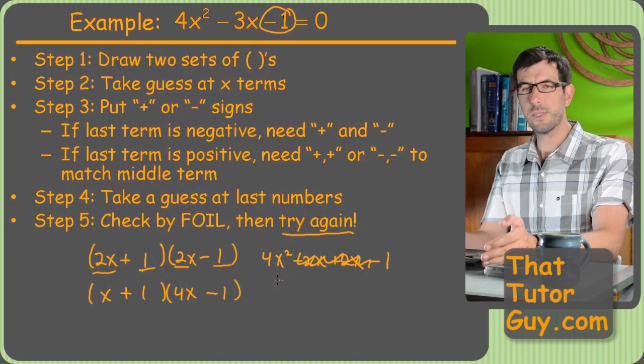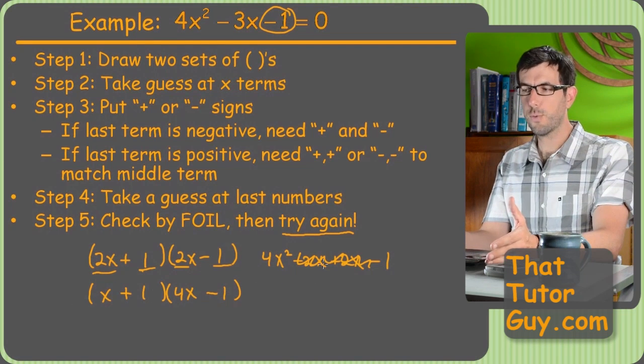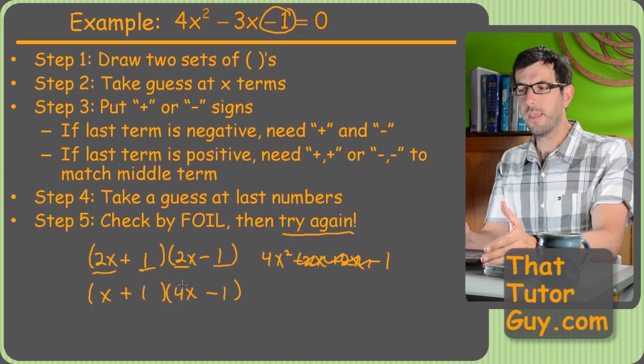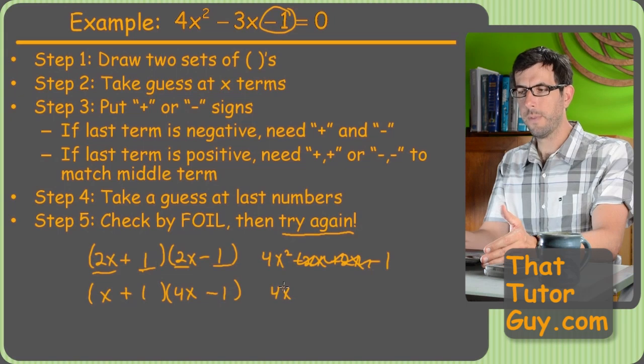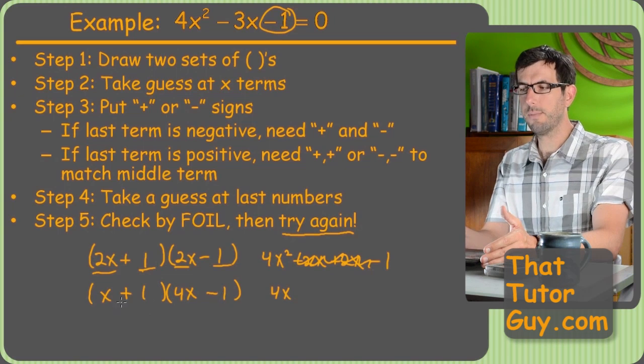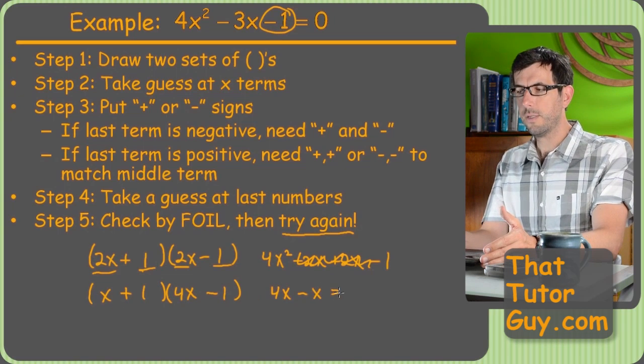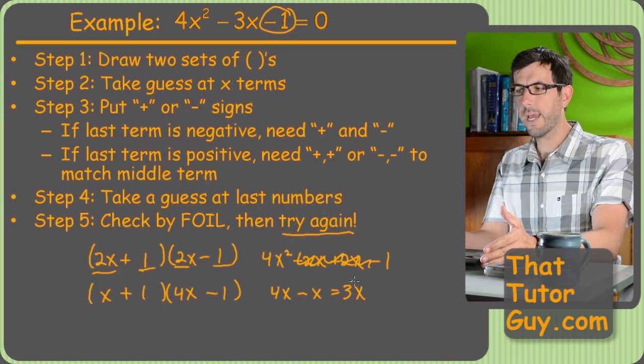And we'll stick to the plus 1 and minus 1. Foil this out and see what happens. I'm actually going to skip the first and last term, because I know those will work. The middle term's a question mark. 4x times 1 is 4x. And then negative 1 times x is negative x. So now I get a middle term of 3x. Is that correct?